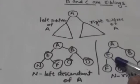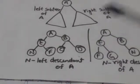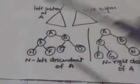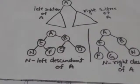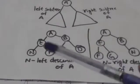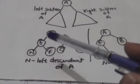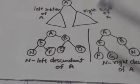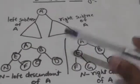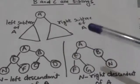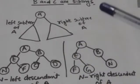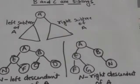If node N belongs to the left subtree of node A, then node N is called left descendant of node A. If node N belongs to the right subtree of node A, then it is called right descendant of node A.